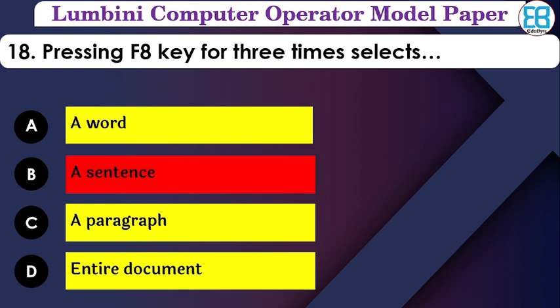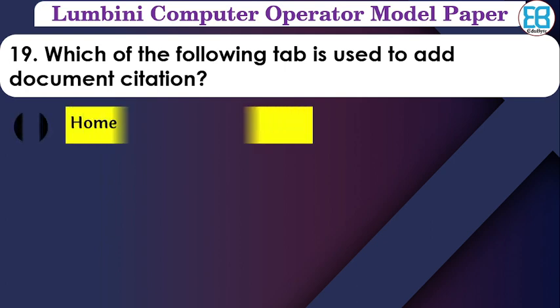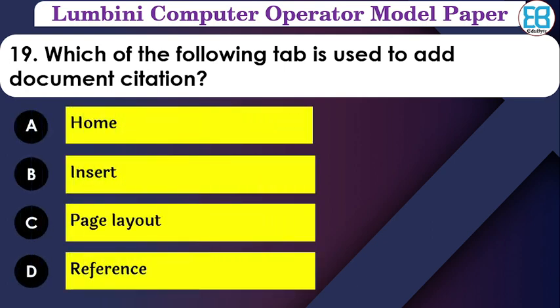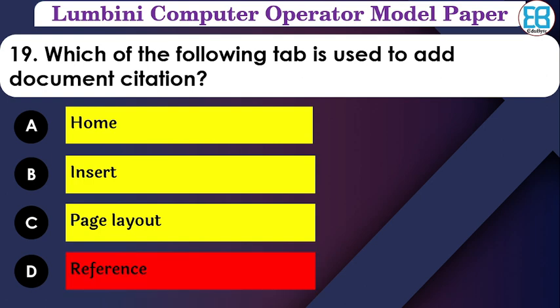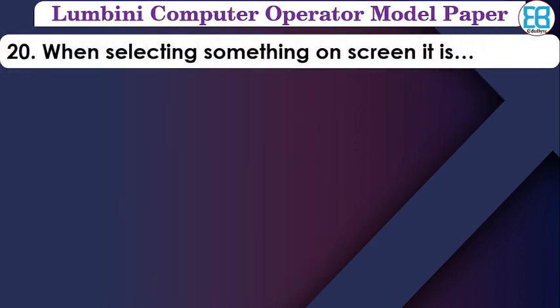Which of the following tab is used to add a document citation? The options are: Home, Insert, Page Layout, References. The correct option is References — document citations are found under the References tab.